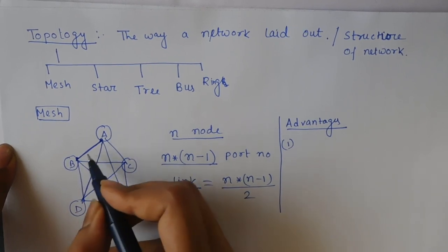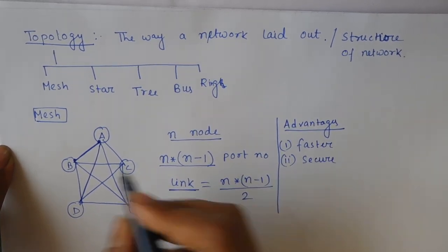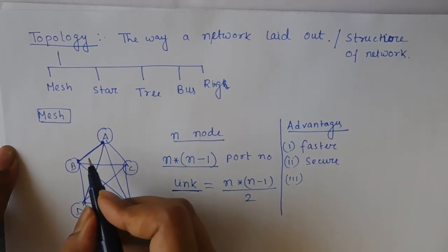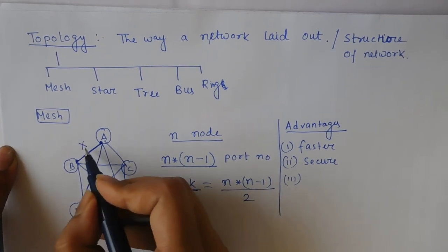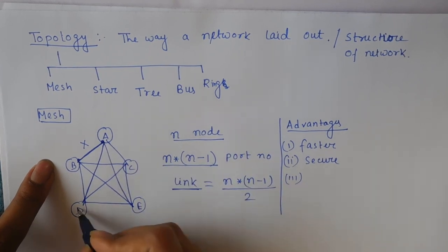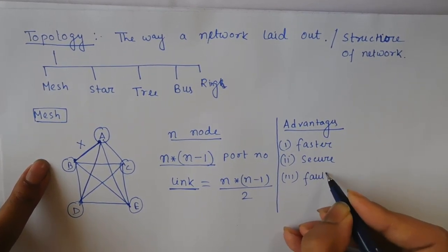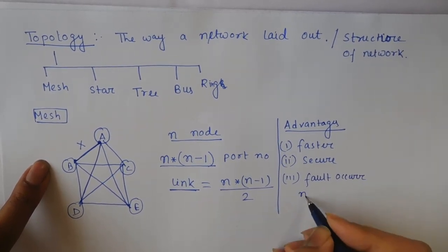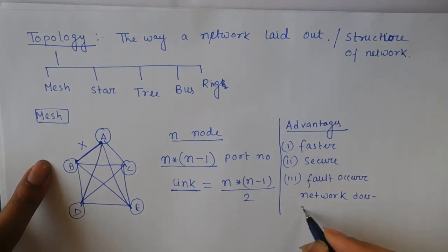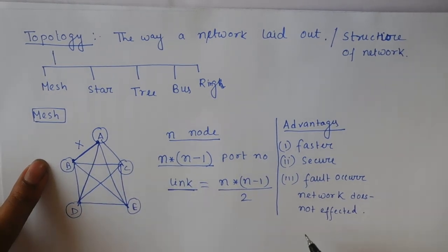Because it shares a dedicated link, communication is faster and also more secure, since a link is shared only by the sender and receiver. If there is any fault — suppose this link is faulty — A can send information through D, C, or E, so the rest of the network works properly. If a fault occurs, the network is not affected. Fault detection and isolation is also very easy. These are the advantages.